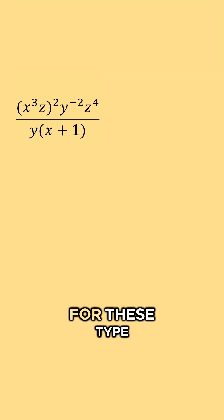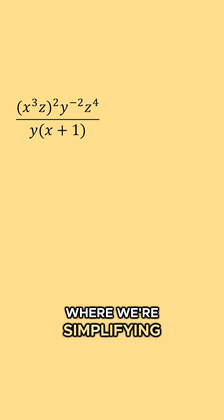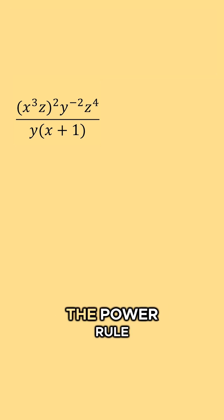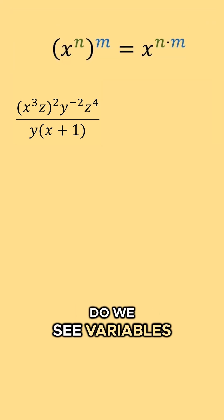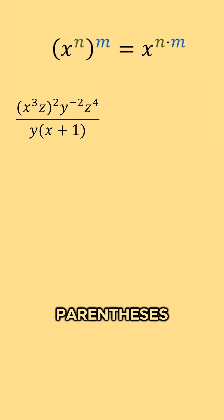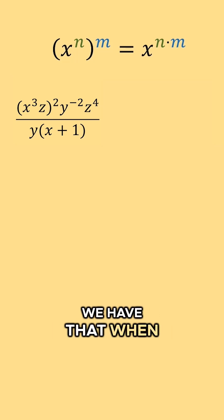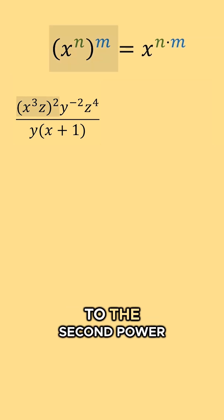I personally believe for these type of problems where we're simplifying, it's always good to start with using the power rule. If the power rule is within the problem, I would use it. So in other words, do we see variables raised to power within parentheses then raised to another power? Well, it looks like we have that when we have x to the third times z, all of that raised to the second power.